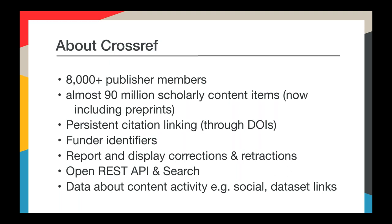Our member organizations are from a range of countries all around the world. They vary greatly in size, have differing business models, provide different types of content hosted on all different kinds of platforms, and publish in a whole host of subject areas. Our voting members are publishers, but our data is used behind the scenes by a number of organizations, including libraries. In the past we've been known as a DOI provider, but the metadata we collect is becoming more relevant to scholarly communications in general. We think of ourselves as having 90 million metadata records that include persistent links, not just 90 million DOIs.